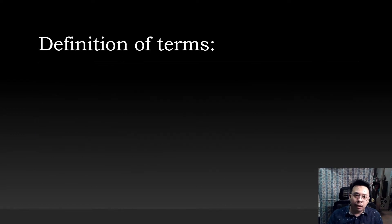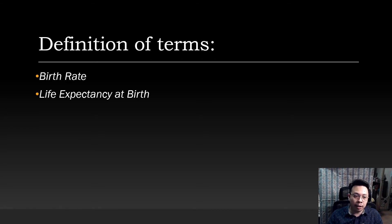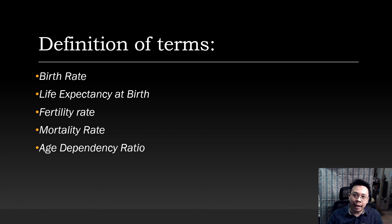In conjunction with learning about demography, we must also define the following terms: birth rate, life expectancy at birth, fertility rate, mortality rate, age dependency ratio, and migration.